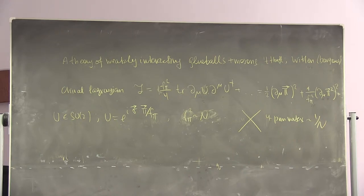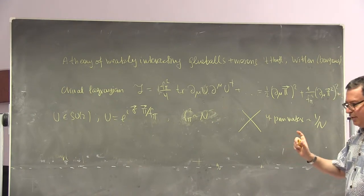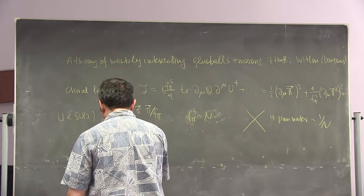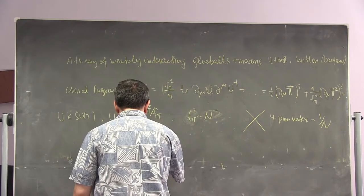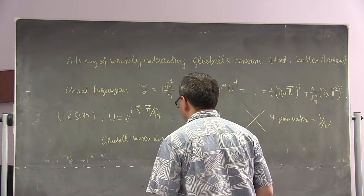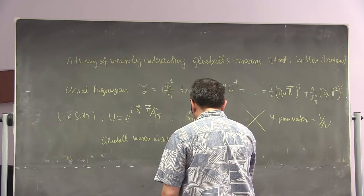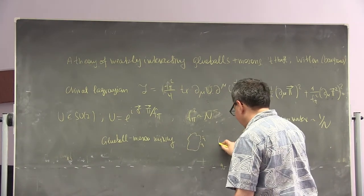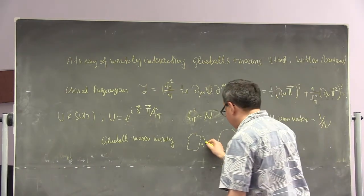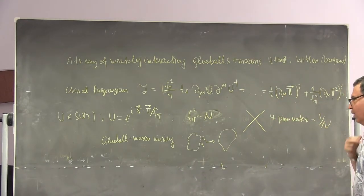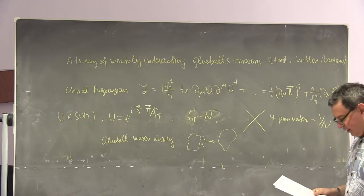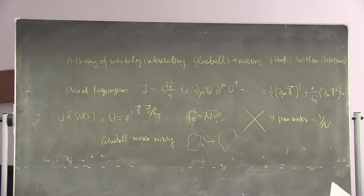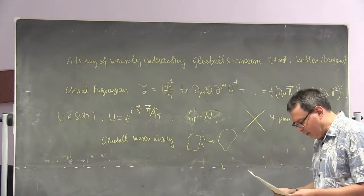If anyone tells you string theory is totally detached from reality, it's not true — at least it gives interesting ways to think about large-N QCD. String theory is definitely a mainstream field in this context. The 1/N expansion is a mathematical crutch to get hold of the theory, but there are some examples where the large-N limit is actually physical. We're perhaps a bit unlucky that N_c = 3; if the number of colors were larger, say 13, you would have much cleaner Regge trajectories with many well-identified states.